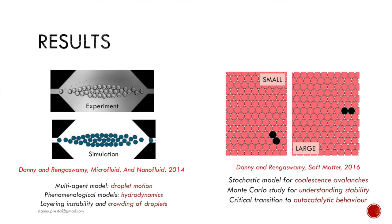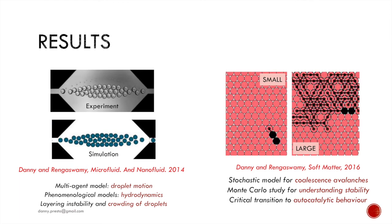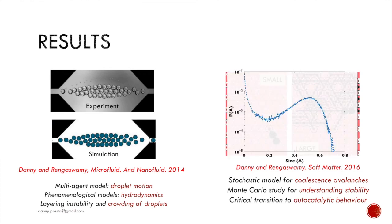We used probabilistic rules to understand the stochastic coalescence avalanches in 2D microchannels. Here are two realizations of the same where you see both large and small avalanches. By employing a Monte Carlo run we were able to generate the probability of an avalanche as a function of its size and derive the nature of the avalanche distribution.